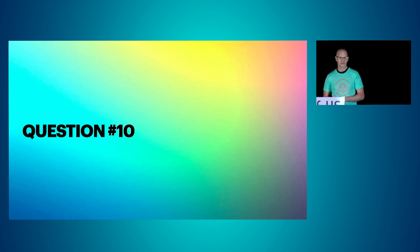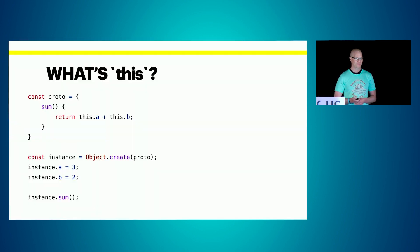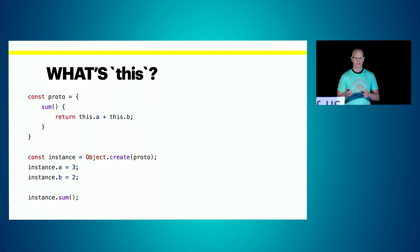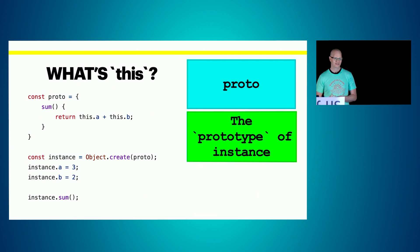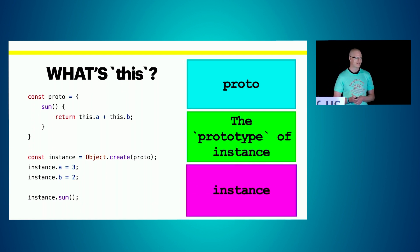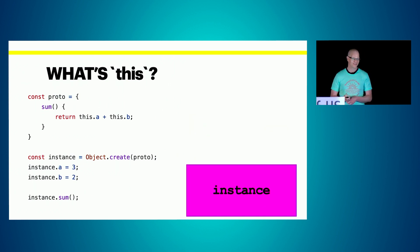Question number ten, the last one: we have an object literal called 'proto' with a function 'sum' that returns 'this.a + this.b'. We use Object.create with 'proto' as the prototype to create 'instance', set a and b to 3 and 2 respectively, then call sum on instance as a method. What's 'this'? Is it the proto object, the prototype of instance, or the instance itself? If you answered instance, you're right — always look to the left of the dot, regardless of prototype chain traversal.